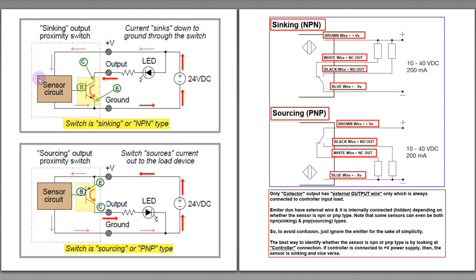When this sensor or switch detects something or any object in front, it will send a pulse to the B or base. You can assume this base as a gate or door. When it detects the pulse, the base or the gate will open so that the current can flow through. For the sinking or NPN type switch, we can treat NPN as negative-positive-negative.